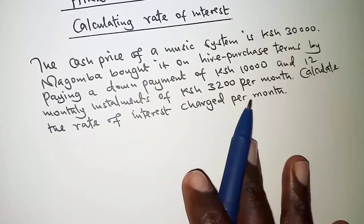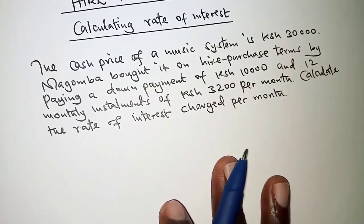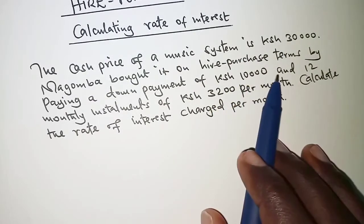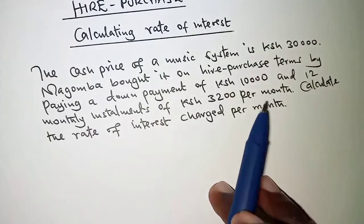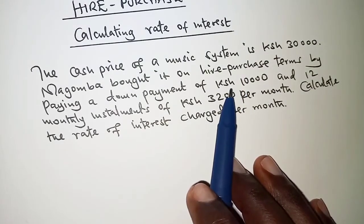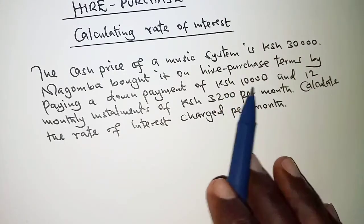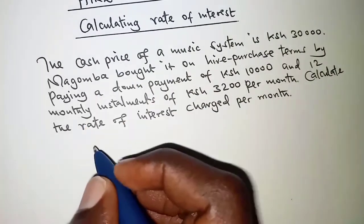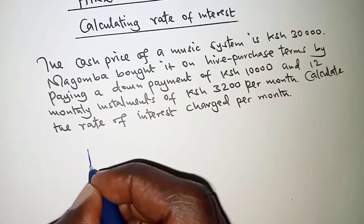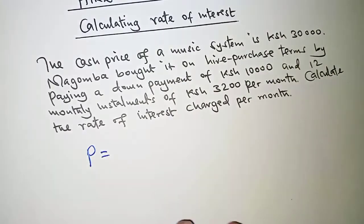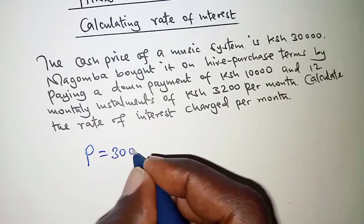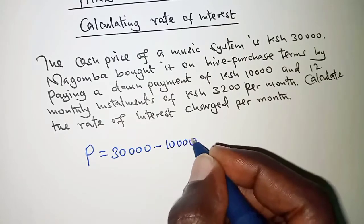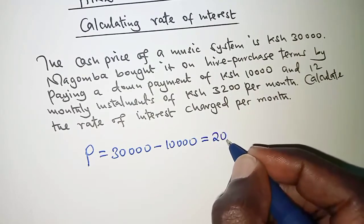But Magomba decides to pay on hire purchase terms and therefore he pays 10,000 as deposit. And that simply means that whatever is remaining to be paid is 30,000 minus the 10,000 that has been paid. And that we will treat as the principal. So we call it principal for this case. And we simply have 30,000 minus 10,000, and that is 20,000.